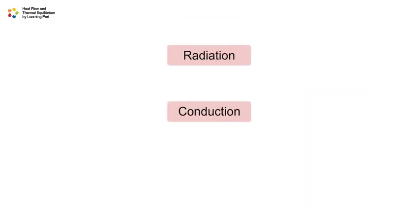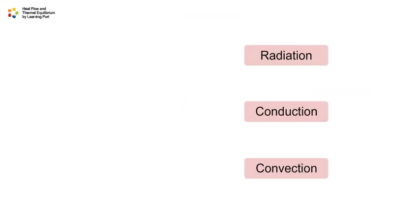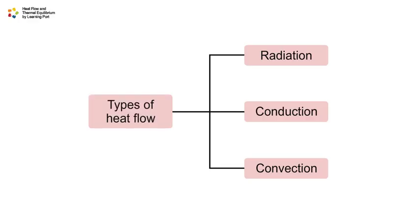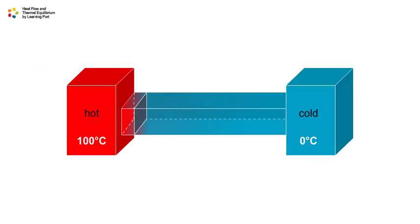Radiation, conduction, and convection are different ways of heat flow. In all three ways of heat flow, heat flows from a hotter area to a colder area.